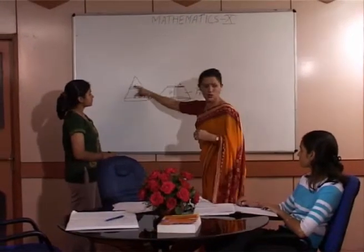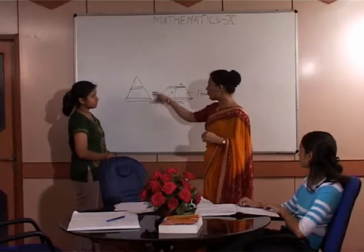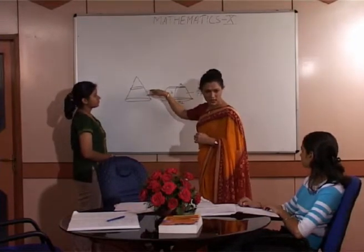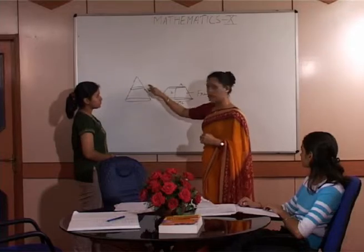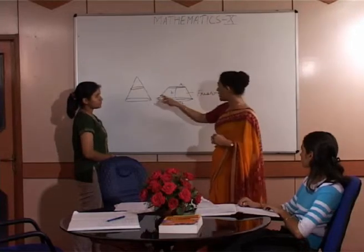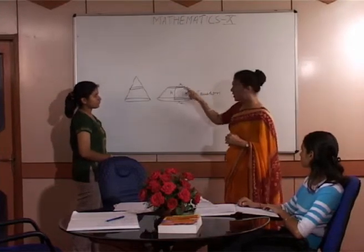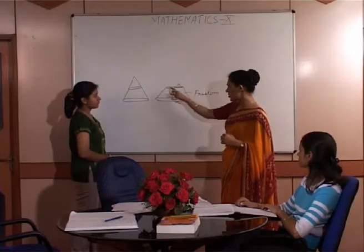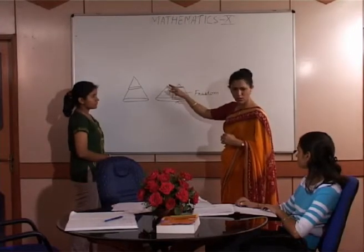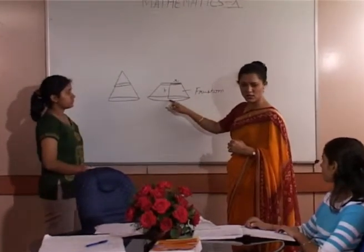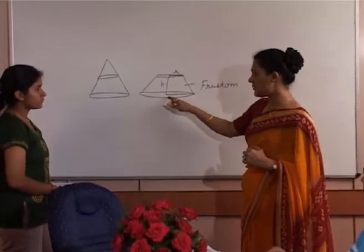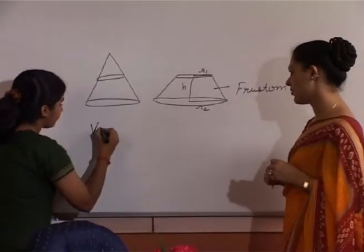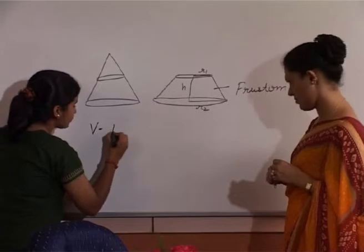See, this is the cone. When you cut the cone with a plane, this bottom part is called the frustum — which is this. This is the radius, and this is also the radius because it's circular, and this is the height.